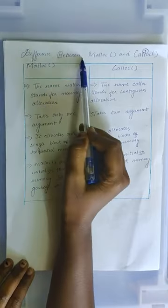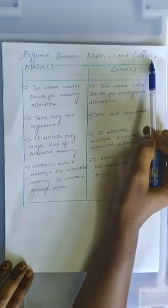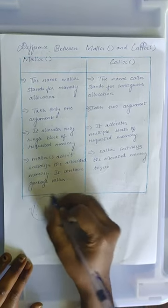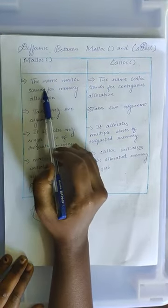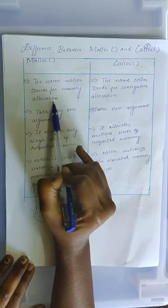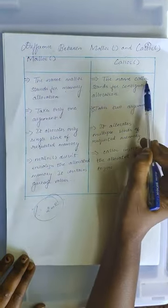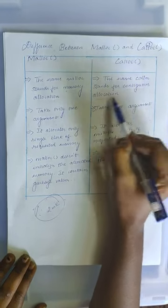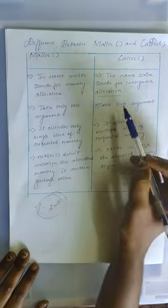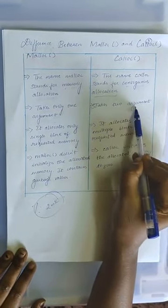We will see the difference between MALLOC and CALLOC which is a very important two mark question. The first difference: the name MALLOC stands for memory allocation. The name CALLOC stands for contiguous allocation. MALLOC takes only one argument but CALLOC takes two arguments.